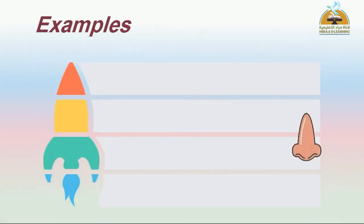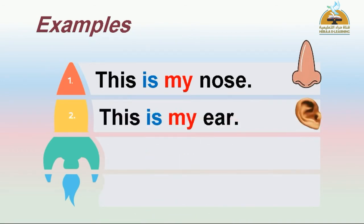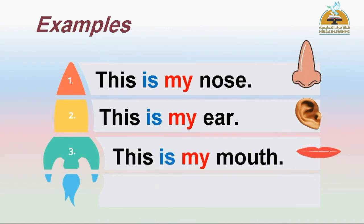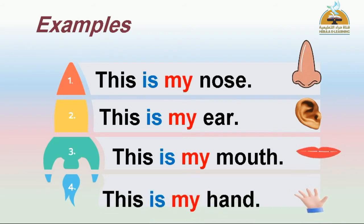Example. Number one: This is my nose. This is my nose. Number two: This is my ear. This is my ear. Number three: This is my mouth. This is my mouth. Number four: This is my hand. This is my hand.